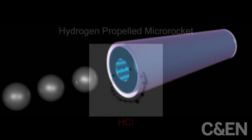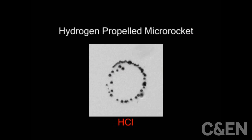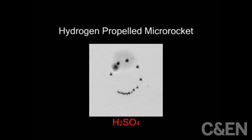Wang and his group showed that the new rockets are speediest in concentrated hydrochloric acid, run slower in sulfuric acid, and move slower yet in phosphoric acid.